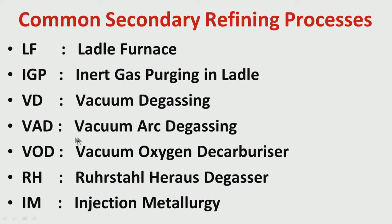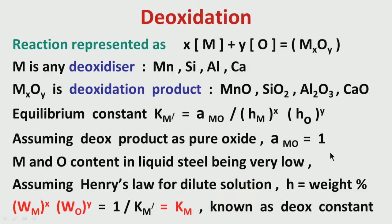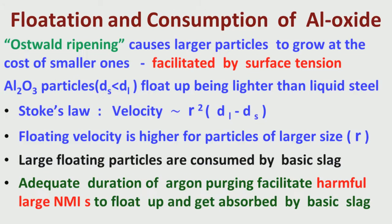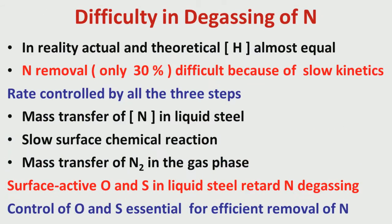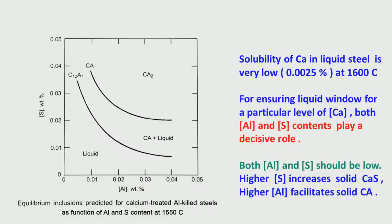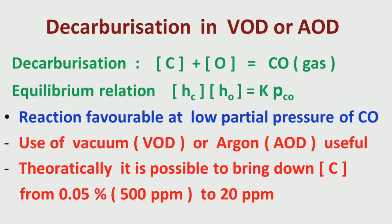What I have not talked about until now is the vacuum oxygen decarburizer — how it helps in controlling carbon, which is very important. Today I will be talking about decarburization. It can be done both by vacuum as well as by argon. If you look into the decarburization reaction, it will be clear how vacuum or argon helps in decarburization.